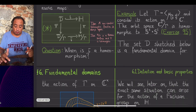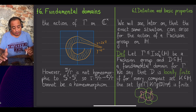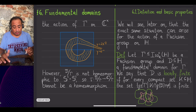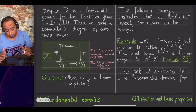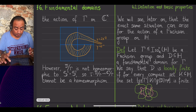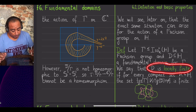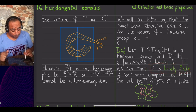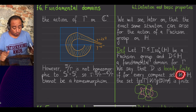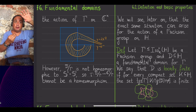Recall that the property of a fundamental domain that guarantees this map is a homeomorphism is local finiteness. We defined a locally finite fundamental domain to be a fundamental domain with the property that for each compact set, when one considers the gamma-translates of D-bar that cover it — since D-bar contains a fundamental set, the translates of D-bar cover any compact K — what we require is that K can be covered by only finitely many translates of D-bar.